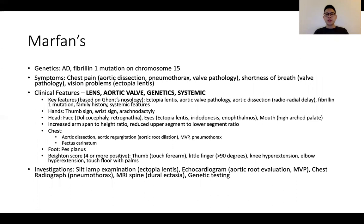Marfan's is an autosomal dominant disorder where there's a mutation in the fibrillin-1 gene located on chromosome 15. In terms of clinical features, I think of it in four big groups. First, lens involvement in the form of ectopia lentis. Second, aortic valve problems in the form of either aortic valve regurgitation, root dilatation, or overt aortic dissection.